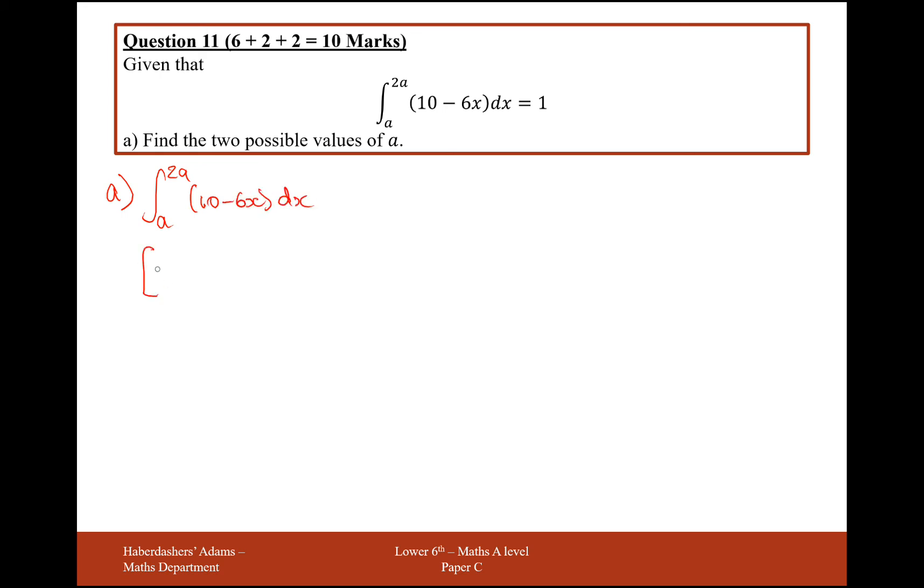Now do the integration, it would be 10x minus 3x squared. And we're going to plug in the values of 2a and a and set this equal to 1. So from here we're going to get, the first part we plug in 2a and we're going to get 20a minus 12a squared. And then we're going to take away 10a and minus 3a squared.